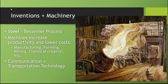Then there were some rather large inventions that came about during this time. In terms of steel, the Bessemer process is a process that made producing large quantities of steel very cost effective. You need steel to make skyscrapers and heavy machinery necessary for this expansion, so steel is going to be a huge factor in why industrialization takes the United States by storm. Machines in general are also going to increase productivity and lower costs.